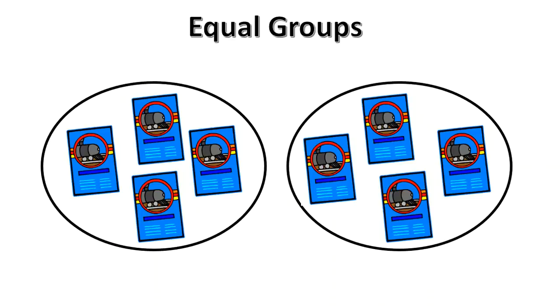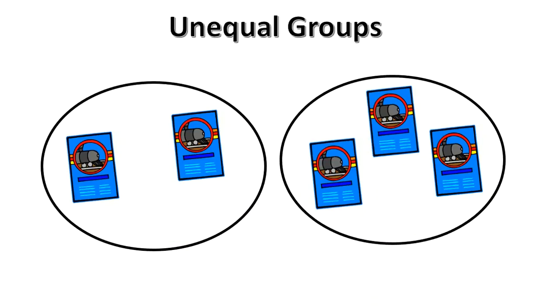Here we see two equal groups of train tickets. They are equal because each group has four tickets in it. These two groups would be considered unequal because the group on the left has two tickets and the group on the right has three tickets.